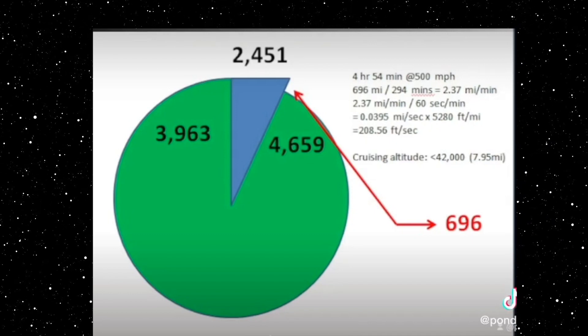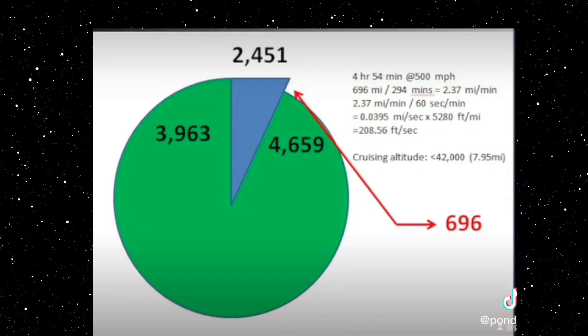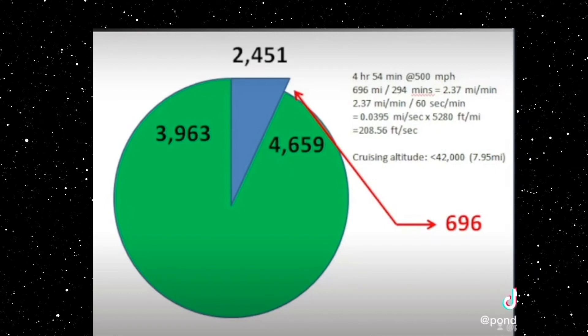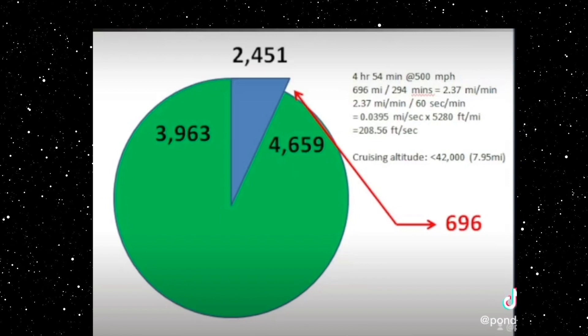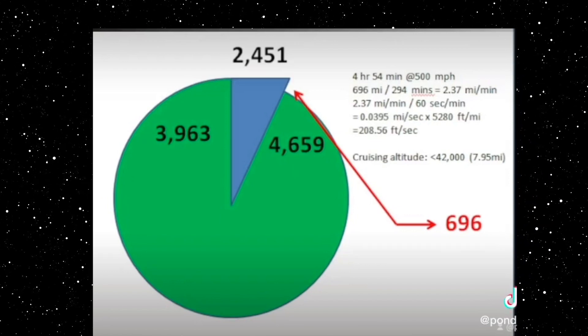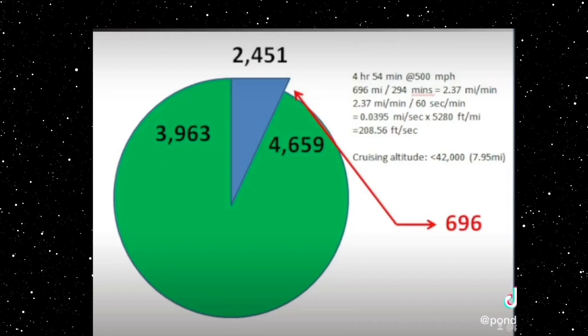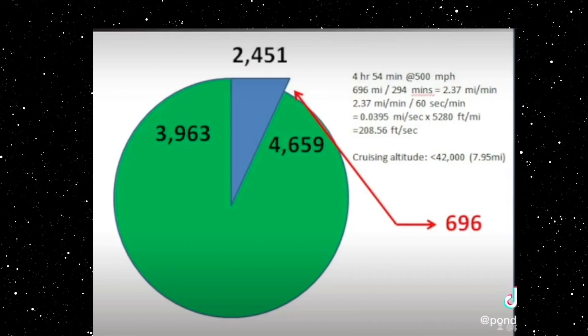Two point three seven miles per minute, or point zero three nine five miles per second, two hundred and eight point five six feet per second. At a cruising altitude less than eight miles, you have to descend almost seven hundred miles.